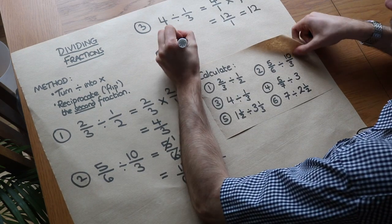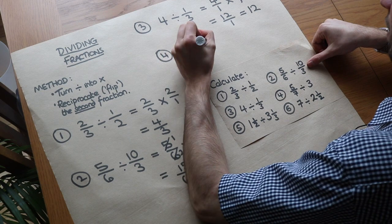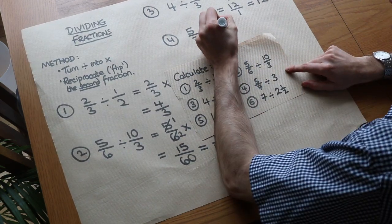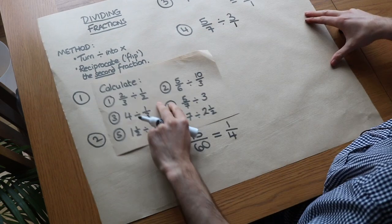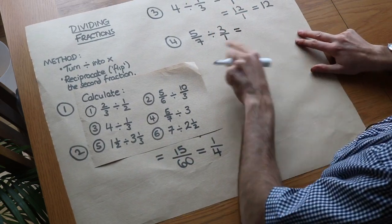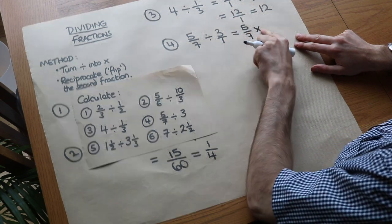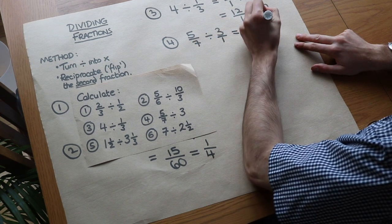What about the fourth one? 5/7 divided by 3. Again we've got a whole number here, so we can write that over 1, which means we can now flip it. So we've got 5/7—keep that as it is—turn the divide into a times, and 3/1 we flip to get 1/3.